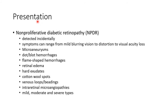Let us see about the presentation of a case of diabetic retinopathy. Diabetic retinopathy can present in three stages. The first stage is non-proliferative diabetic retinopathy, or NPDR. It can progress to proliferative diabetic retinopathy, or PDR, which can further progress to maculopathy.